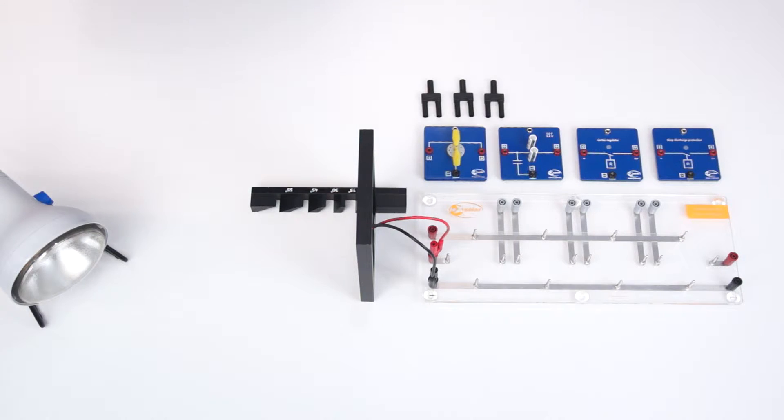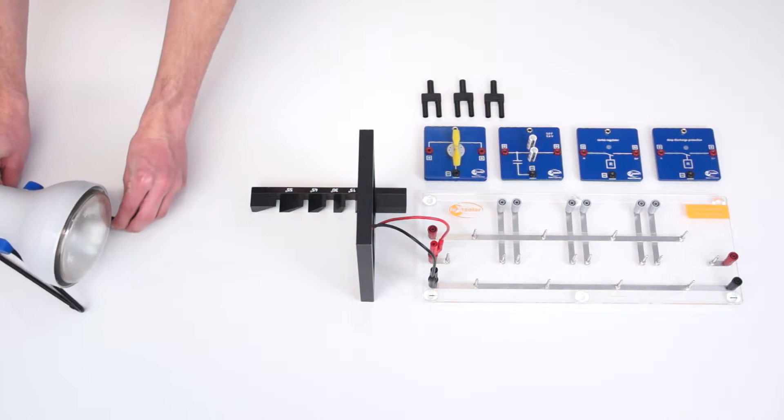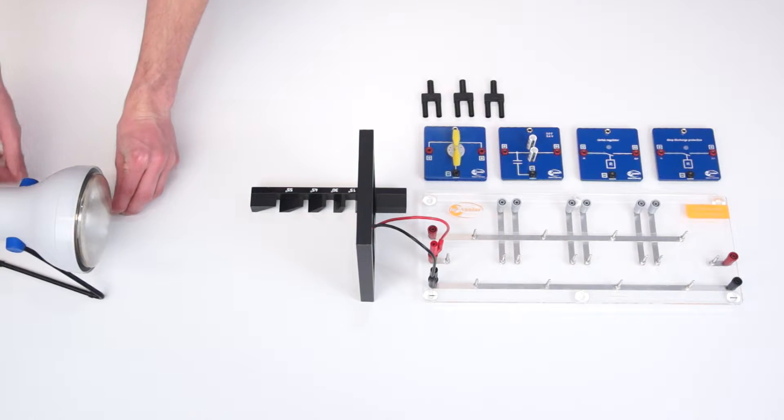For the illumination of the solar module, we use the lamp. It is frontally aligned before the solar module. With our experiment, we want to gradually illustrate the role and necessity of individual components.